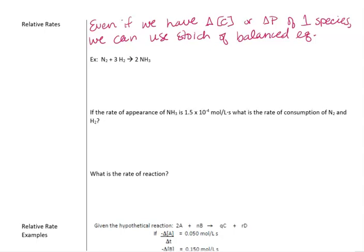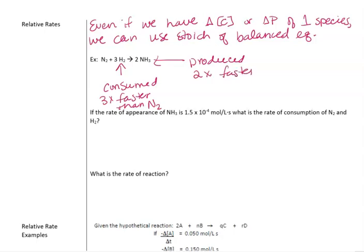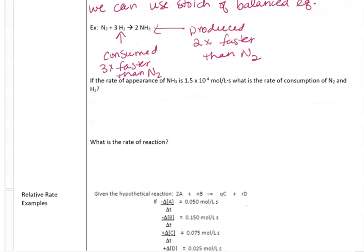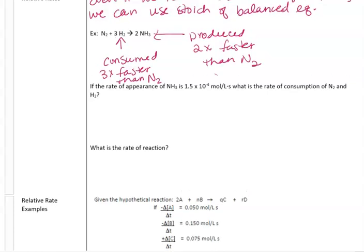Here we have an equation where nitrogen and hydrogen form NH3, or ammonia. Notice that hydrogen is going to be consumed three times faster than nitrogen, and NH3 will be produced two times faster than nitrogen. They want us to find the rate of consumption of nitrogen and hydrogen, knowing that NH3 has a rate of appearance of 1.5 × 10⁻⁴ moles per liter per second.